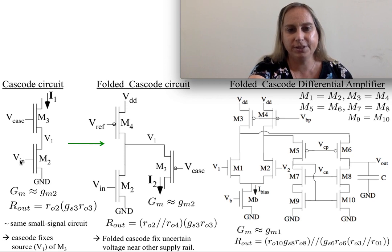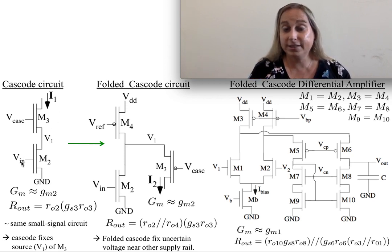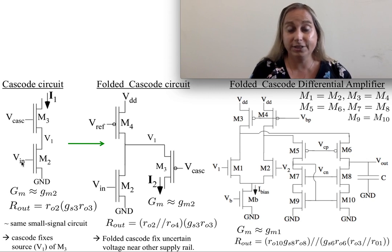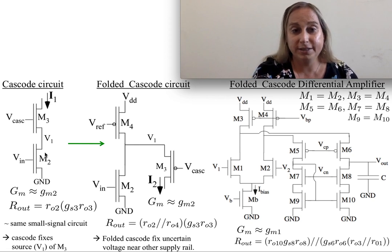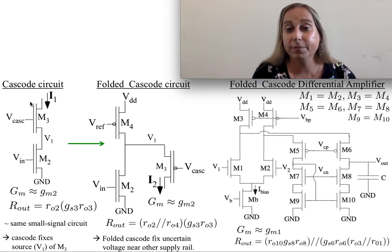If you look at this from the input to the current, it still looks like I have basically the same transistor. I have a certain transconductance overall for this system, which is relatively just GM2, but then I also have an output resistance. That is the output resistance of this element, and then I get GS3R03 from the top transistor. You can see there's a pattern to this.